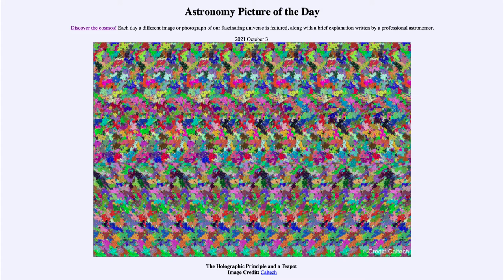It is titled the holographic principle in a teapot. So what do we see here? What looks like a somewhat random scattering of colors across a two-dimensional image here is actually meant to represent what we call the holographic principle.